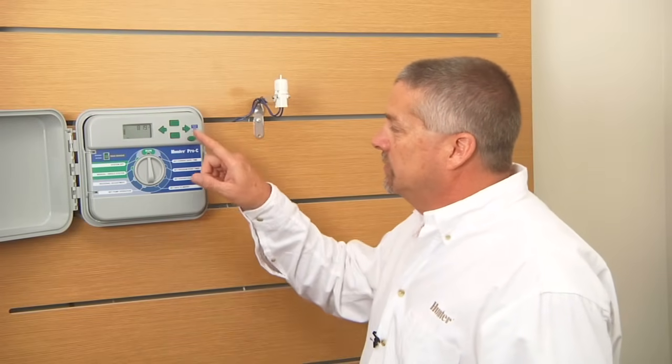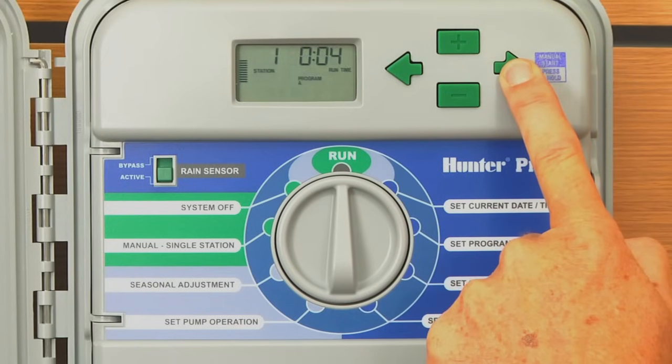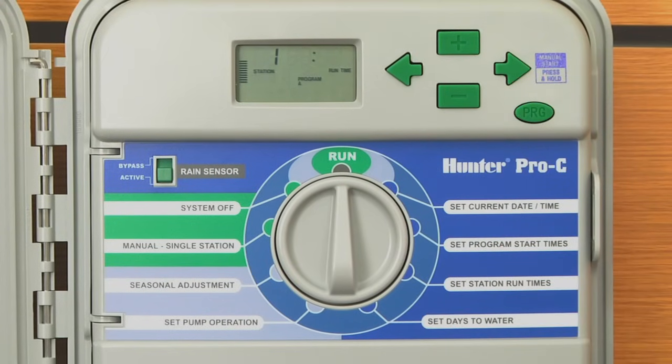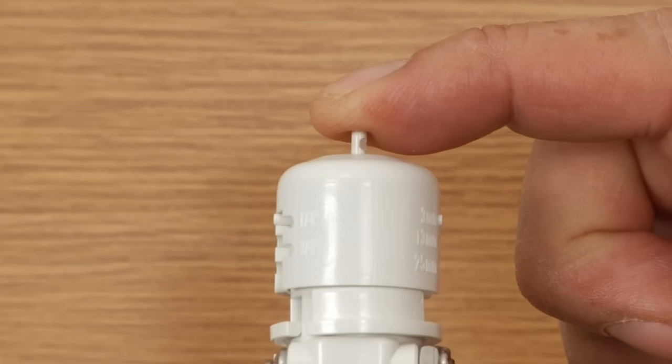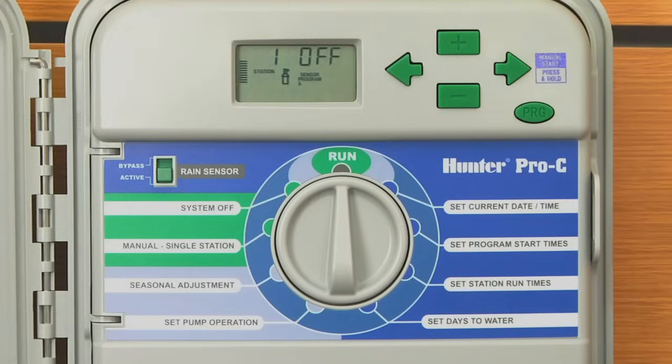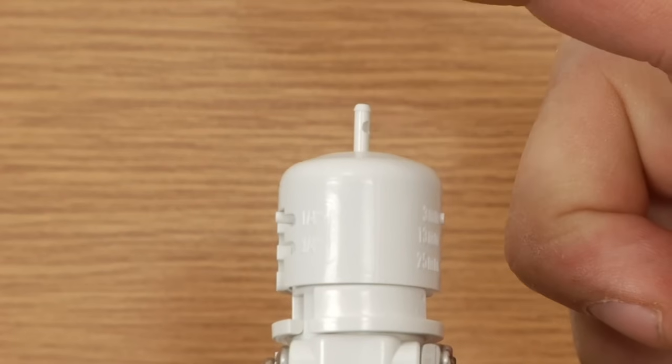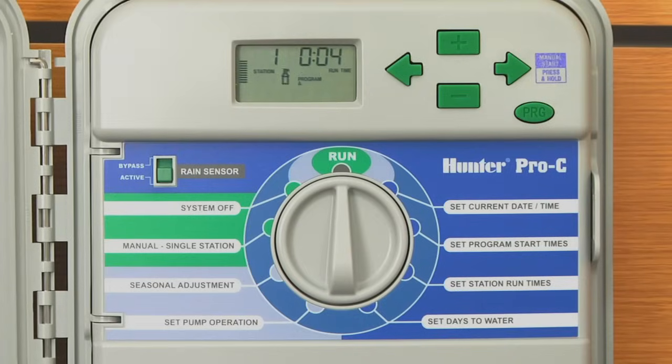And in this controller, we're going to use the right arrow to access that feature by holding down the right arrow and station one is running. Now we have a program running. If I go to the sensor, I hold down the button and you'll see the word off displayed in the screen. By letting go of the button, it will go back to running that station.